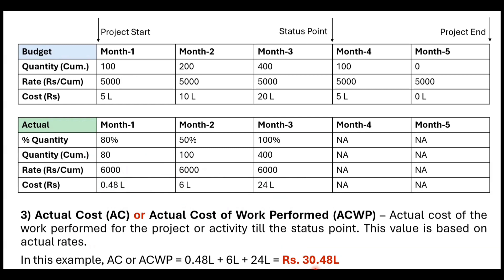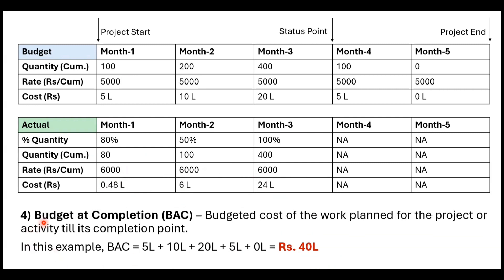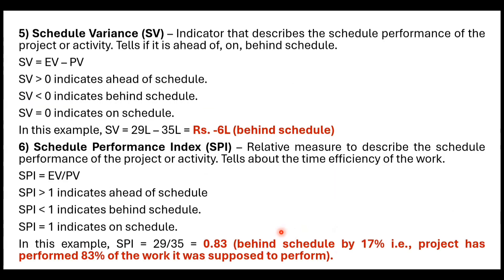Budget at Completion (BAC) is the budgeted cost for the complete activity or project till its completion point. Referring to the budgeted cost table: ₹5 lakh + ₹10 lakh + ₹20 lakh + ₹5 lakh + ₹0 lakh = ₹40 lakh. This is your Budget at Completion. Now moving to one very important parameter related to schedule — Schedule Variance — which requires PV and EV.